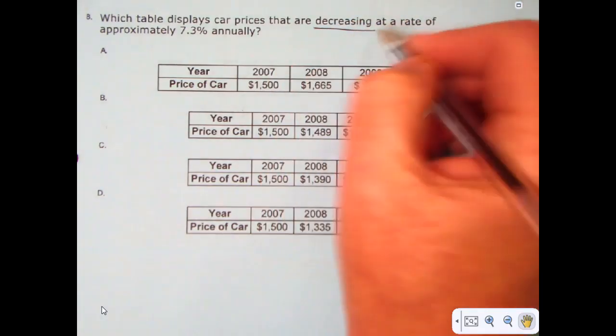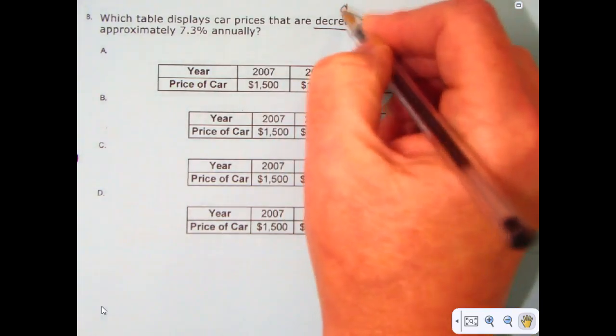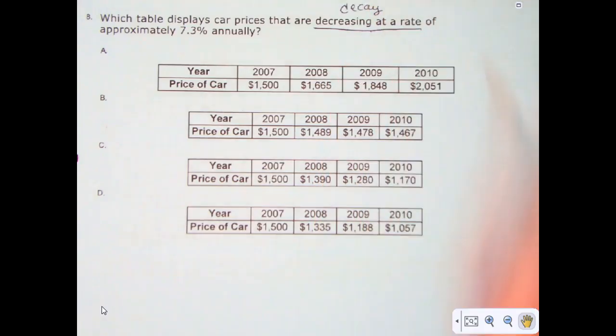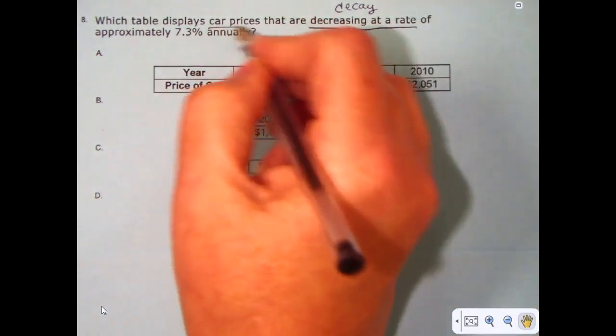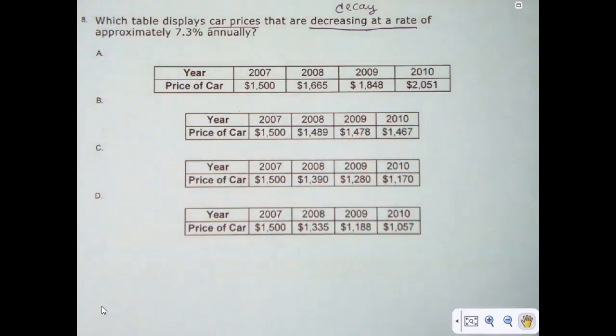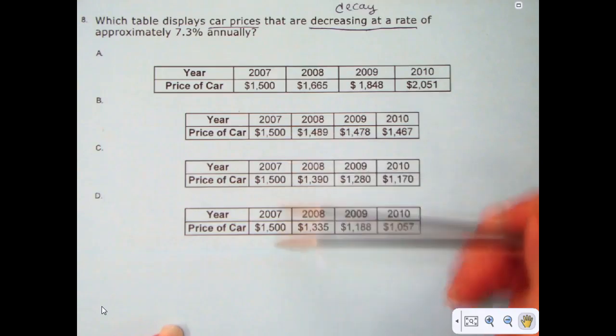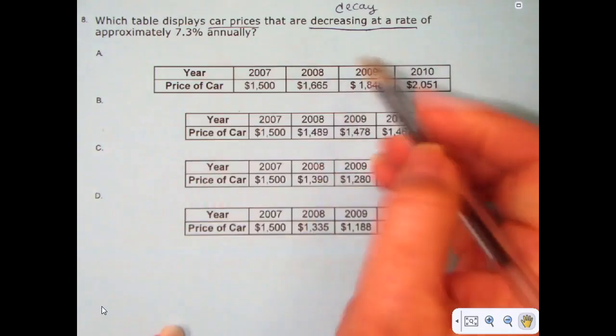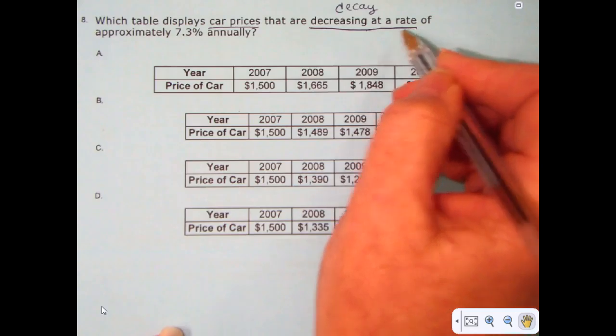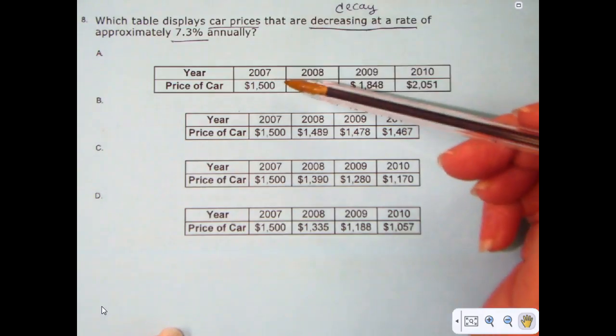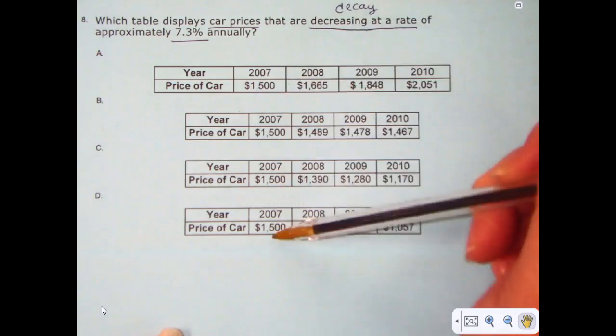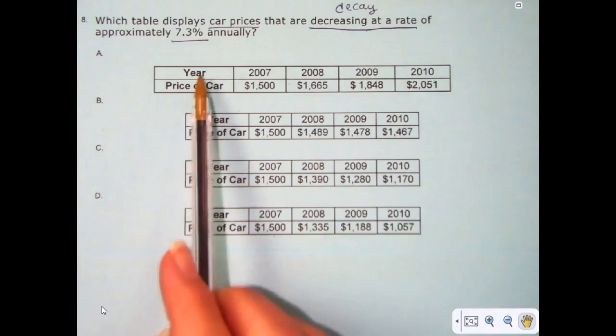Hi, this is Ms. Wiles and in this video we'll be looking at decay, even though it's called decreasing. When you have a decreasing rate we're talking about decay. So in this video we'll look at car prices that are decreasing over time and we want to, based on the tables that we have, find one of these that is decreasing at a rate of approximately 7.3 percent annually.